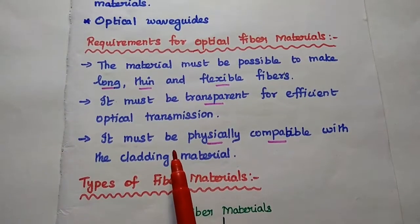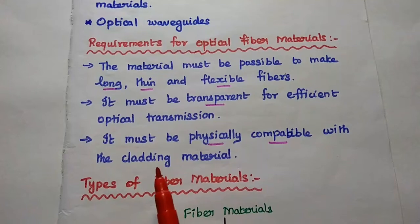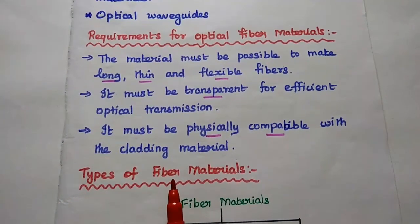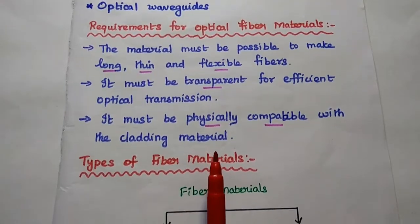The last one is, it must be physically compatible with the cladding material. Because the fiber cable consists of both core and cladding.